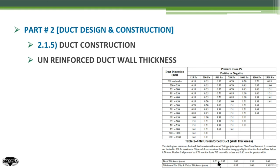For a duct thickness of 0.55 to 0.85 mm, use a joint thickness of 0.7 mm. For a duct thickness of 1.0 mm, use a joint thickness of 0.85 mm. For a duct thickness of 1.31 mm, use a joint thickness of 1.0 mm. For 1.61 mm duct thickness, use a minimum flat slip and drive thickness of 1.31 mm. This is how to specify the thickness of the unreinforced duct wall.